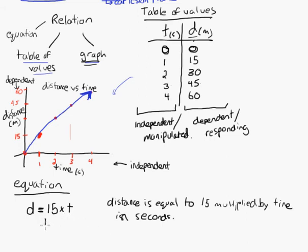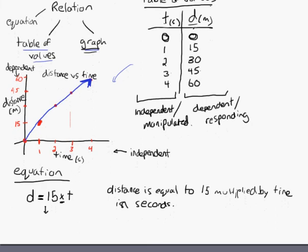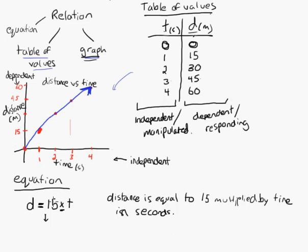Often you don't really put the multiplication symbol in there because everybody knows that when you write a number right next to a variable, you don't need to put the multiplication symbol. So it's just D is equal to 15T. There's our equation.